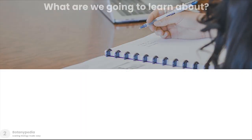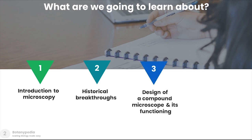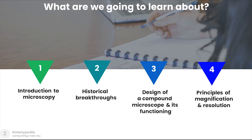In this class we are going to learn about various aspects of microscopy. First we will have an introduction to microscopy, then we will look at the historical breakthroughs in this area. Then we will see the basic design of a compound light microscope and how it functions using a ray diagram. Then we will look at the principle of magnification and resolution.